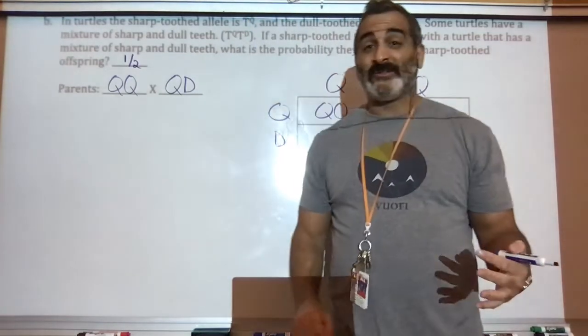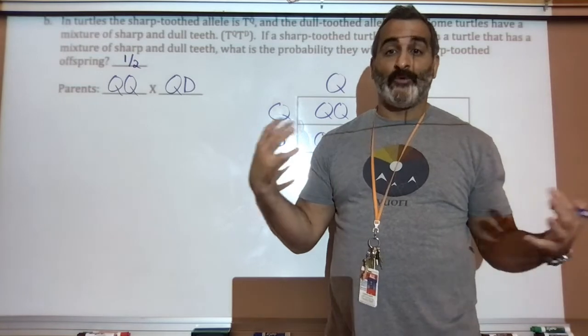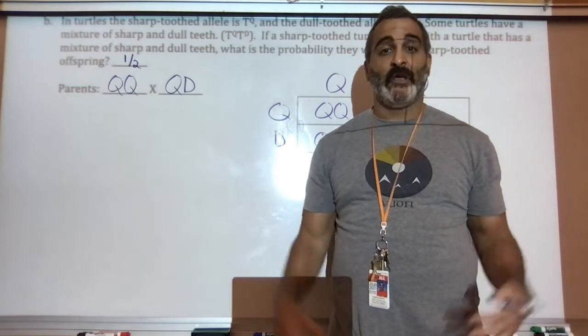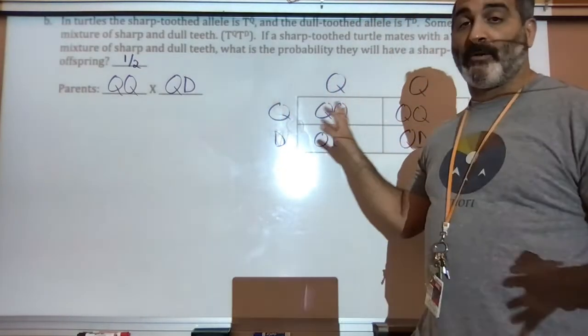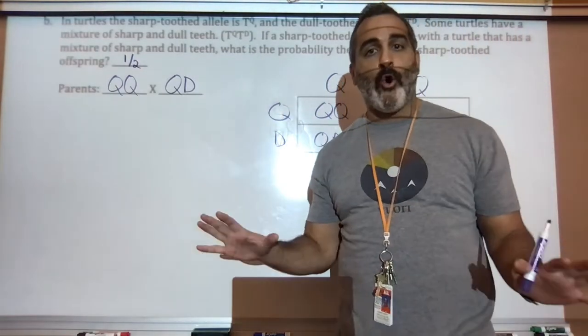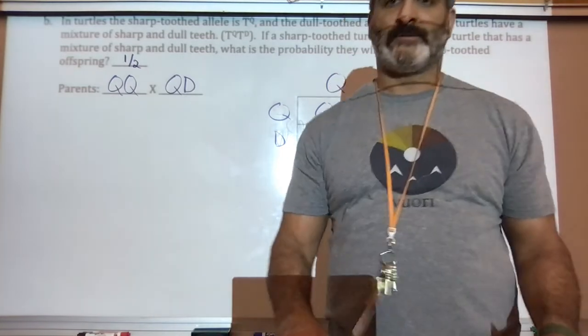That concludes the video on how to do what are called incomplete and codominance type of genetics crosses. Don't forget, everything is dominant. All capital letters. All uppercase. There's no recessive genes in these types of genetics crosses. Thank you.